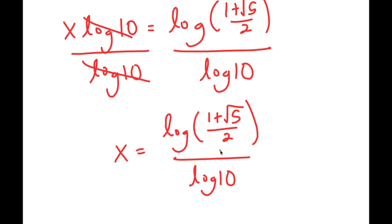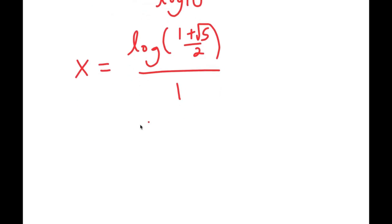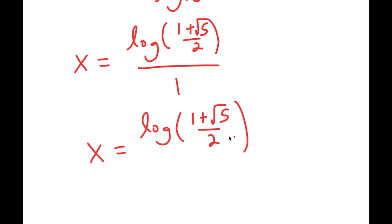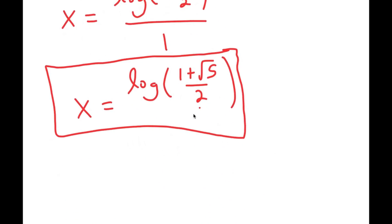And log 10, as you may know, is equal to 1. So this turns into log of 1 plus the square root of 5 over 2, over 1, which is the same thing as log of 1 plus the square root of 5 over 2. There's no need to include the over 1 because anything over 1 is itself. So this is my solution to this equation.